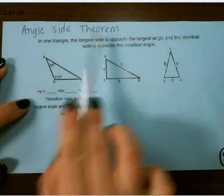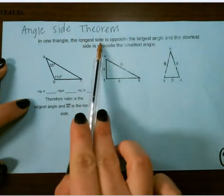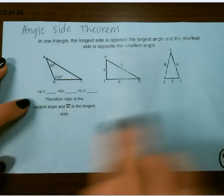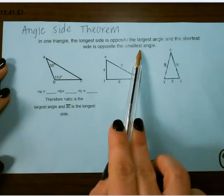In the angle-side theorem, in a triangle, the longest side is opposite the largest angle, and the shortest side is opposite the smallest angle.